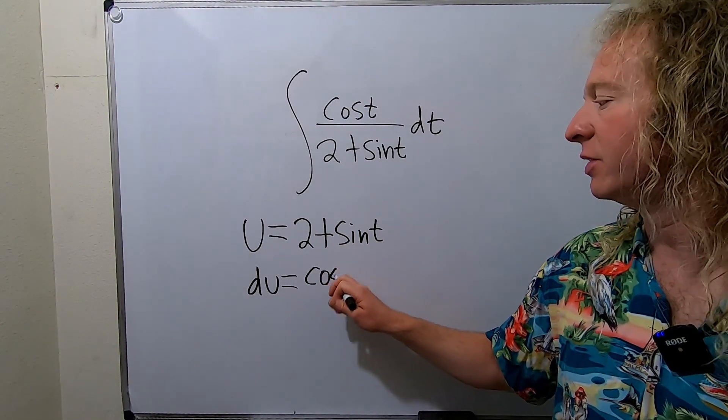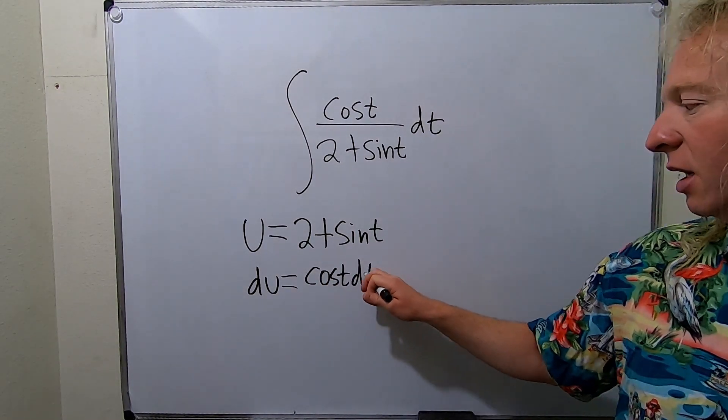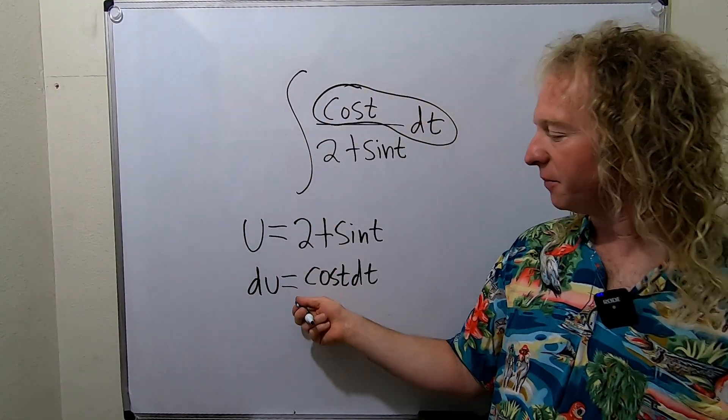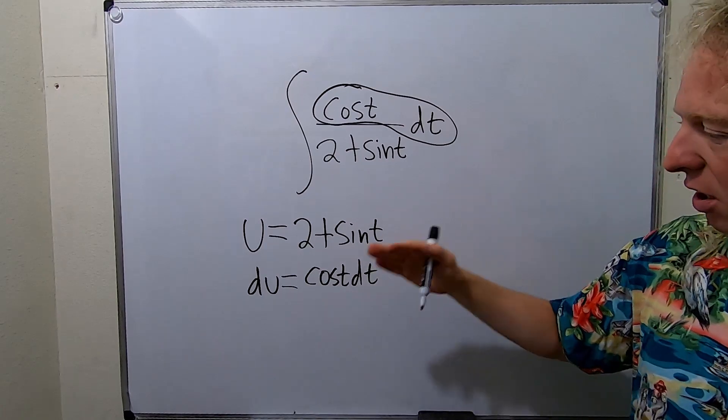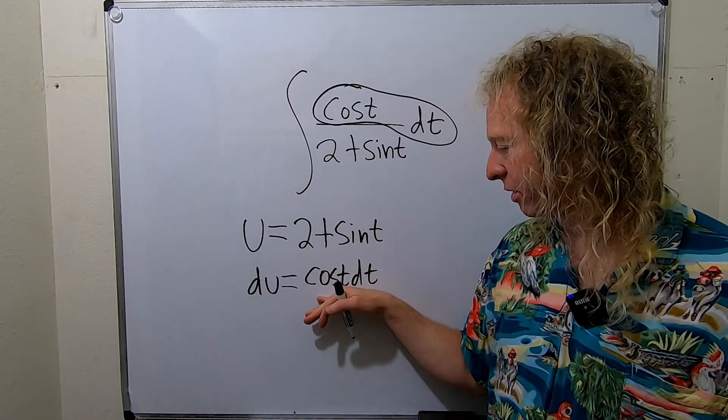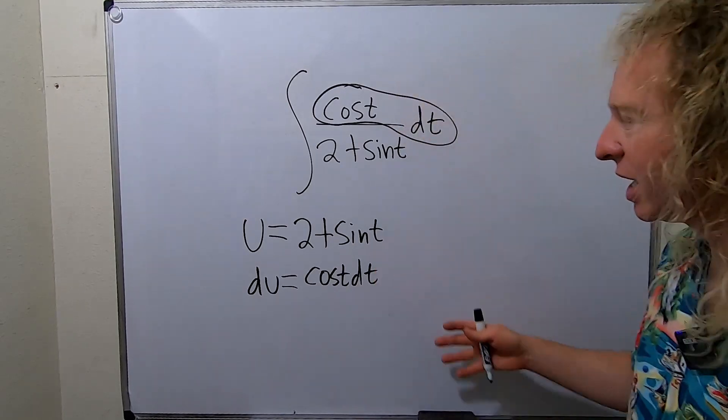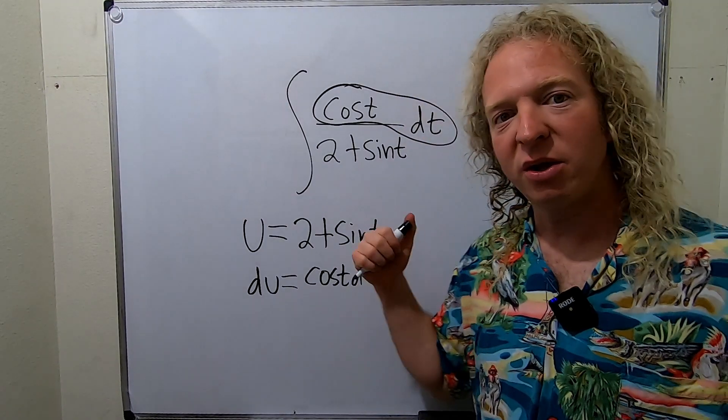So it works out really nice. So you get cosine t and then dt. And that is just beautiful. There's our cosine t dt and there it is there. So whenever you get to this step, your goal is to make this look like whatever's up here. Except in this problem, it worked out really nice. Like it's already there. So we're good.